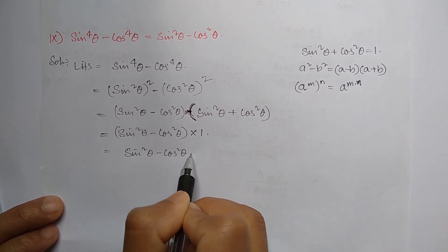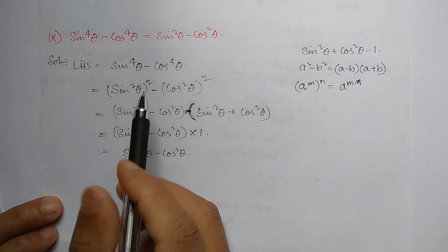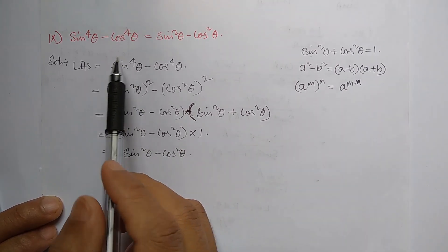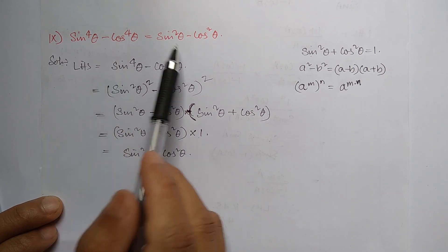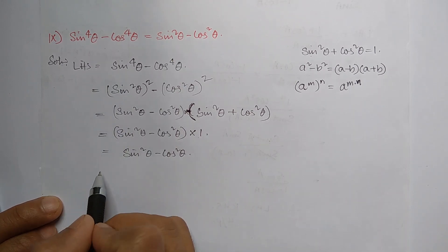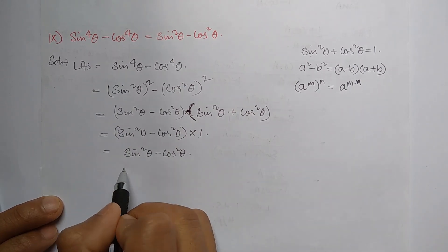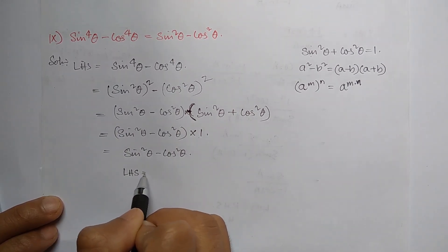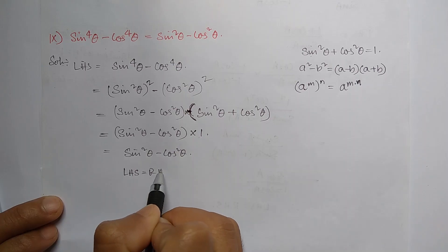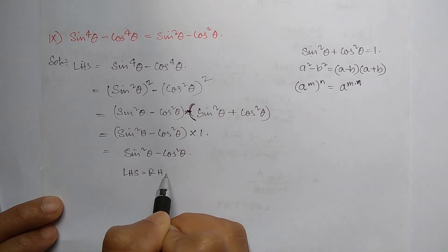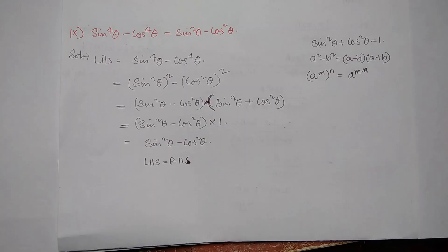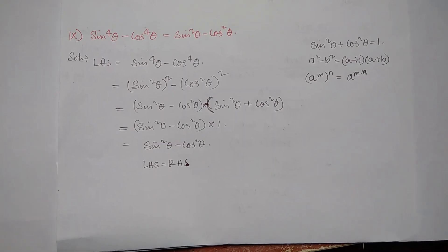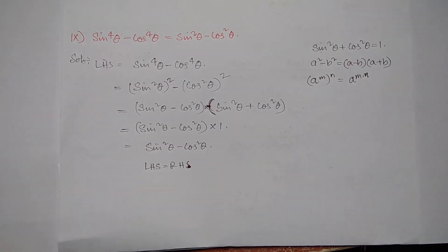The formula gives us: sin squared theta plus cos squared theta equals 1. So the result is sin squared theta minus cos squared theta times 1, which equals sin squared theta minus cos squared theta. Therefore left hand side is equal to right hand side.